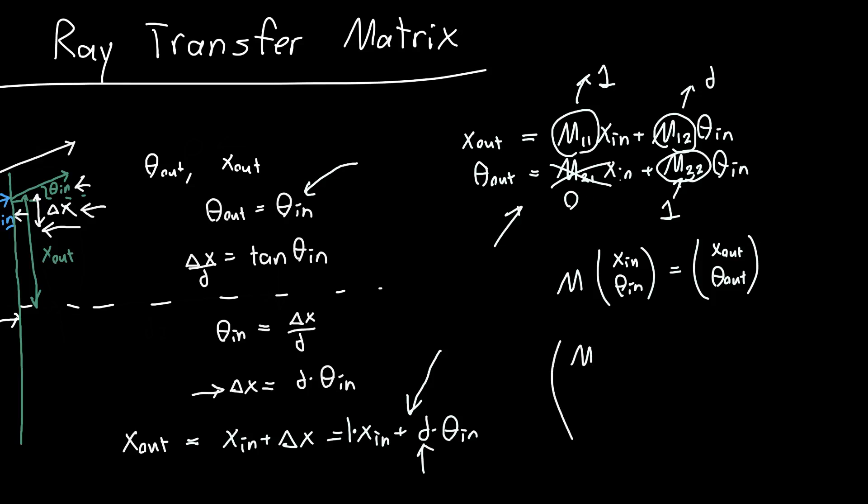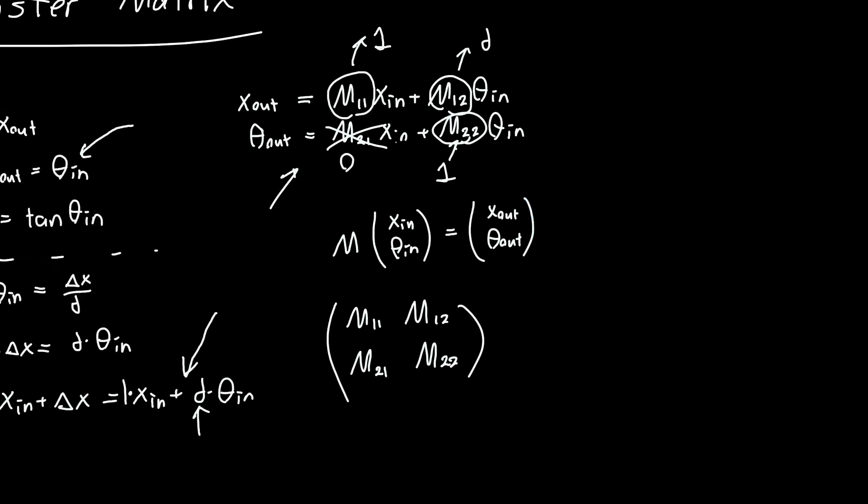Because we know the matrix we're talking about is just m11, m12, m21, m22. So our propagation matrix for propagation by some distance d is just equal to (1, d, 0, 1).